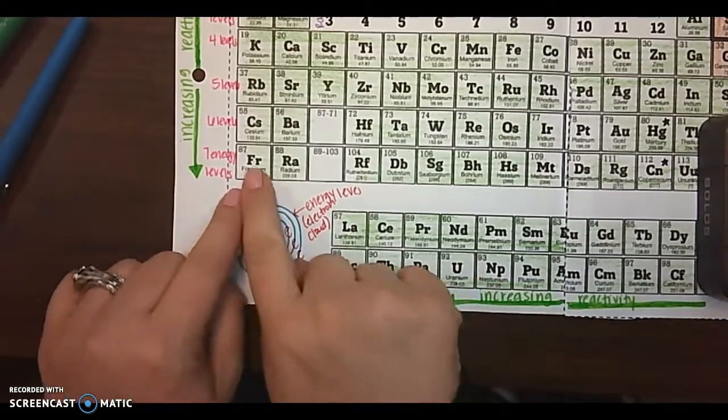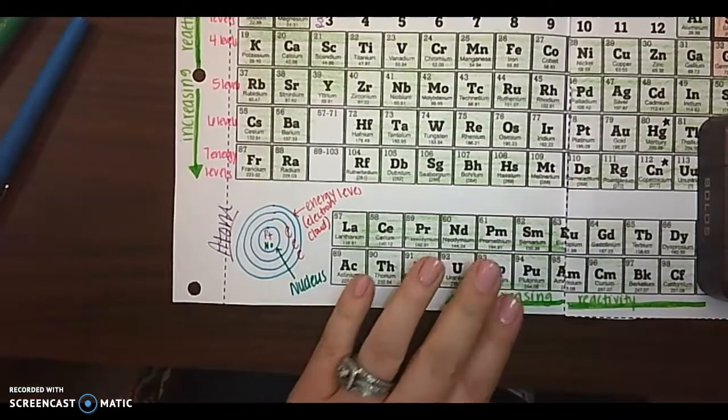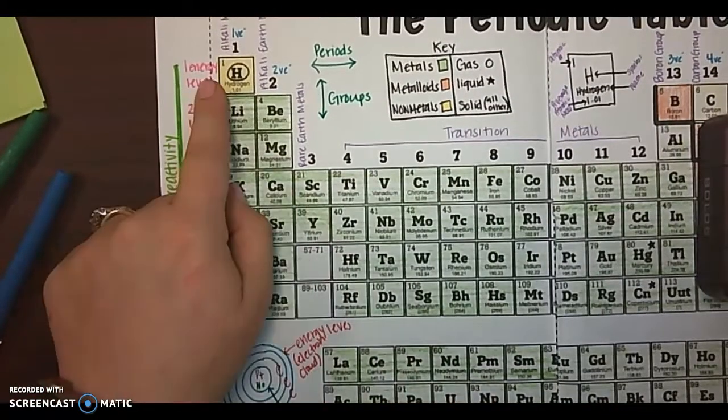So we know that this period has seven energy levels. So all of these, you need to label all the different levels.